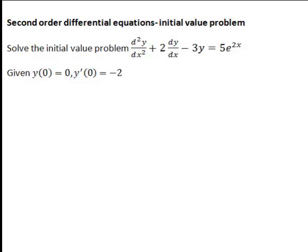The following is an example of solving a second-order differential equation as an initial value problem. We have the second derivative of y with respect to x plus 2 dy/dx minus 3y equals 5e to the 2x. It's an initial value problem because we also have y(0) equals 0 and y'(0) equals negative 2 as initial conditions. The first thing we do is find a general solution, then substitute in those initial conditions.